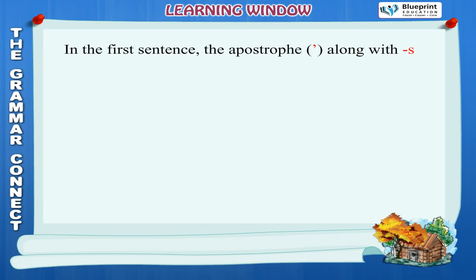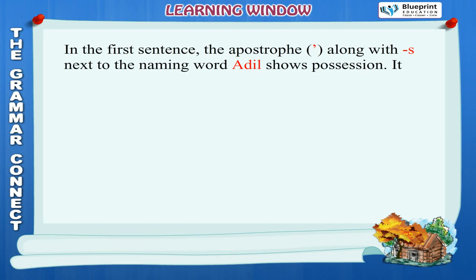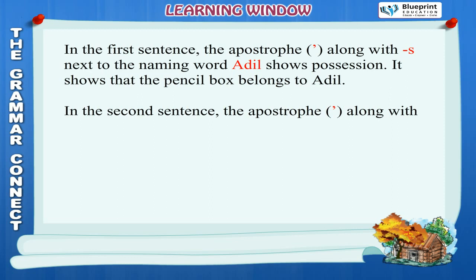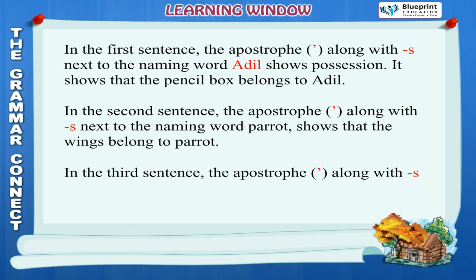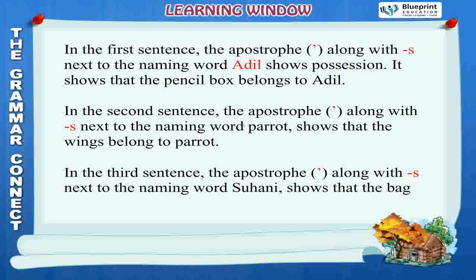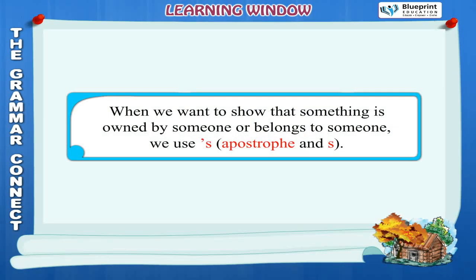In the first sentence, the apostrophe along with S next to the naming word Adil shows possession. It shows that the pencil box belongs to Adil. In the second sentence, the apostrophe along with S next to the naming word Parrot shows that the wings belong to the parrot. In the third sentence, the apostrophe along with S next to the naming word Suhani shows that the bag belongs to Suhani. When we want to show that something is owned by or belongs to someone, we use apostrophe and S.